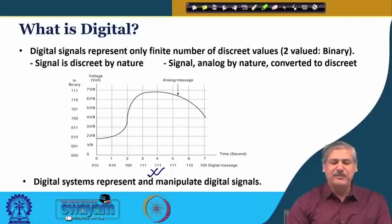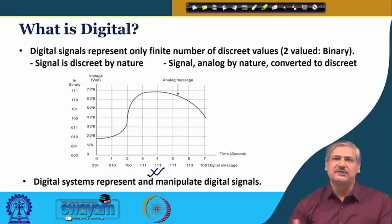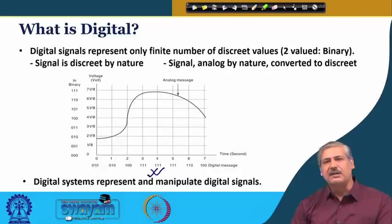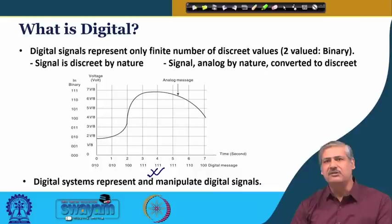The first thing we need to know is what a digital signal is. Digital signals represent only a finite number of discrete values. Finite means we are talking about a certain number of bits or binary values that will be associated with a particular signal and its representation, offering only a finite number of sets and representations. These discrete values, in the context of digital technology, make a representation using a two-valued binary representation. There could be a quaternary — four symbols — but we shall restrict ourselves to two-valued binary representation.